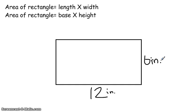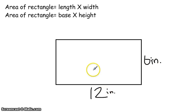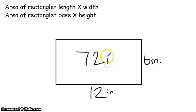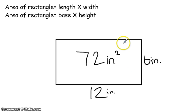To find the area of the rectangle, all we're going to do is multiply those together. So I could do 6 inches times 12 inches, and 6 times 12 is 72. My unit is going to be square inches, or inches squared, because that's how we measure area — it's measured in square units.